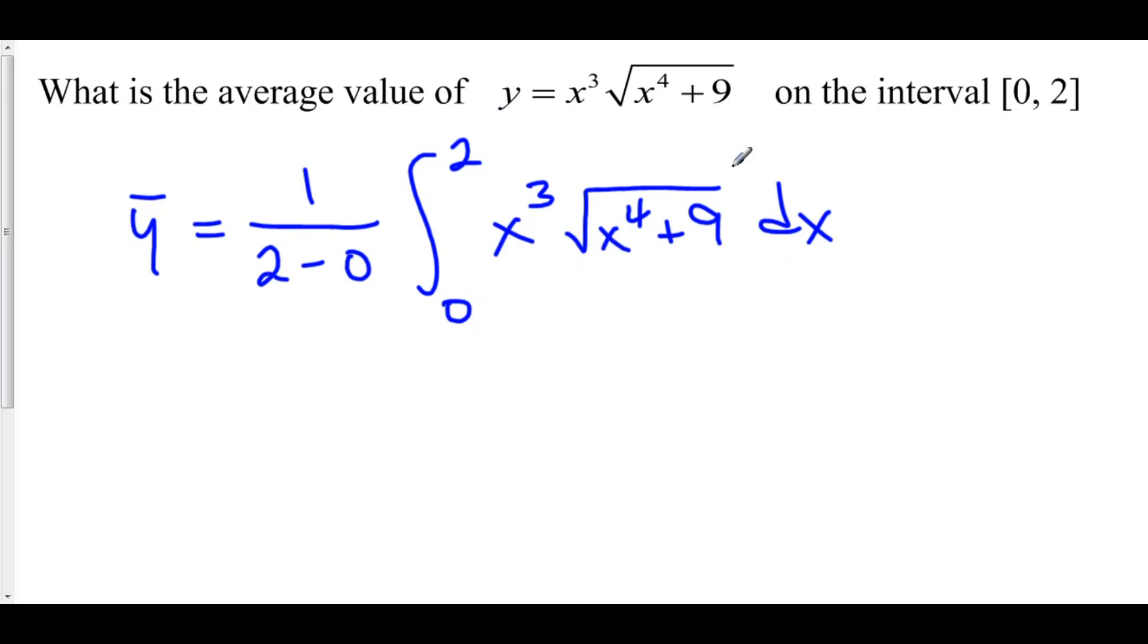Now, we're going to have to do some u substitution in here. I think that maybe the x to the fourth plus 9 will probably be my function because the derivative of x to the fourth is 4x cubed which gives us the x cubed. And I'll include that 9 in there because it's easier to use the entire thing rather than just one part of that little phrase. So let's let u be equal to x to the fourth plus 9. Let's see what happens. That means that du, if you take the derivative of x to the fourth plus 9, you get 4x cubed plus 0 dx.